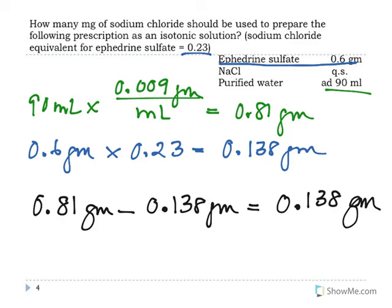For a final check, look at how the problem asks you to answer. Here it asks for milligrams, so when entering your answer on the NAPLEX or a quiz, you must convert 0.138 grams to 138 milligrams.